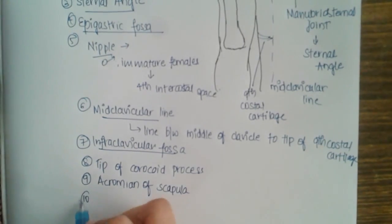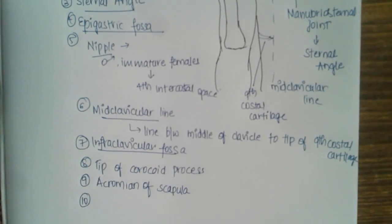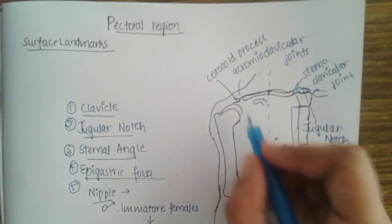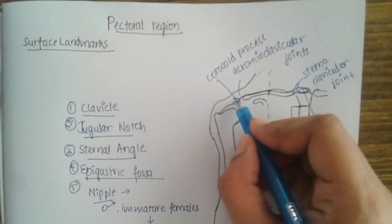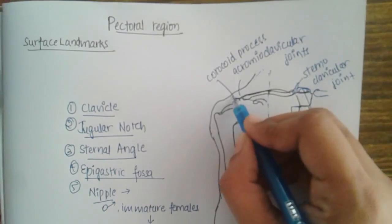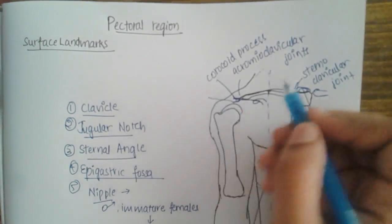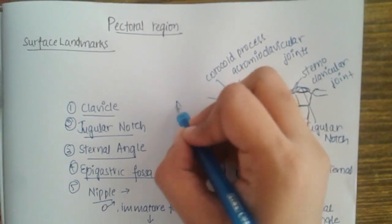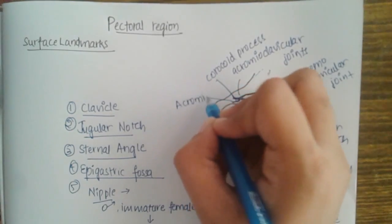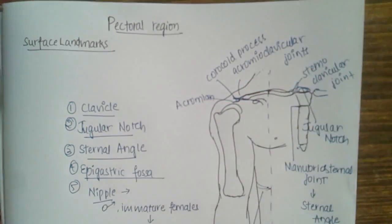I'm sorry — to correct a small mistake: this is the coracoid of the scapula, and this is the acromion of the scapula. I apologize for the earlier mix-up.